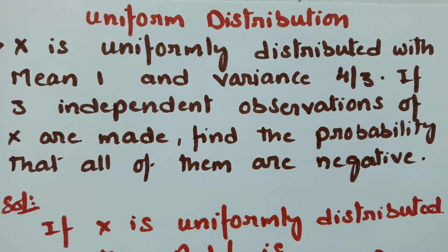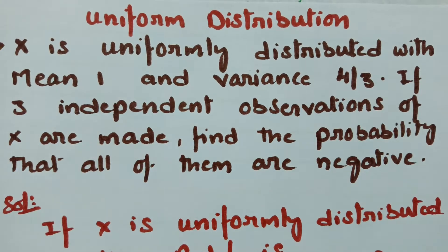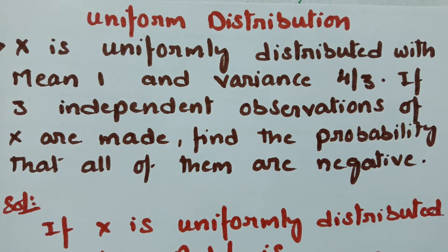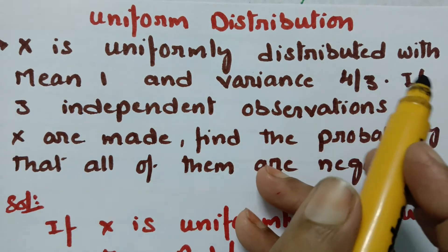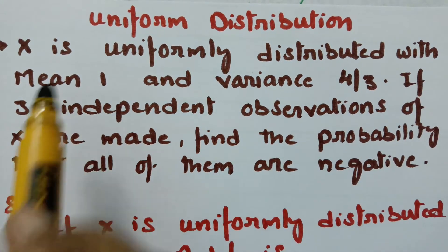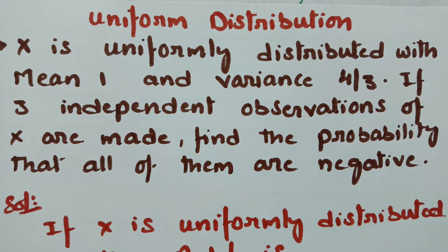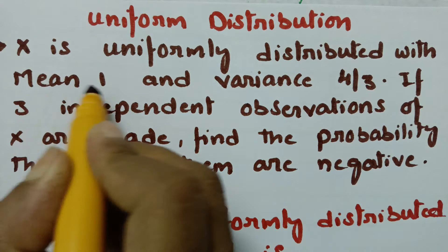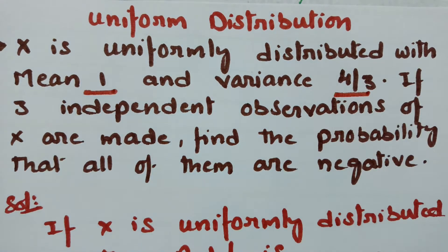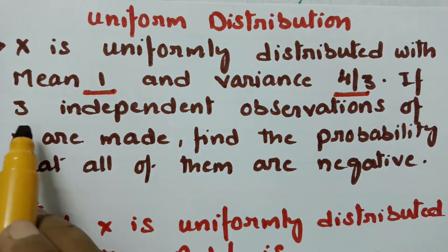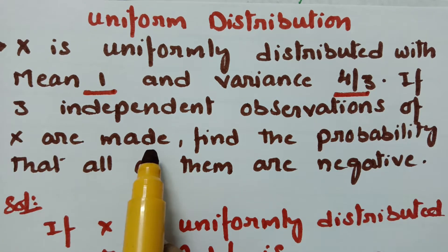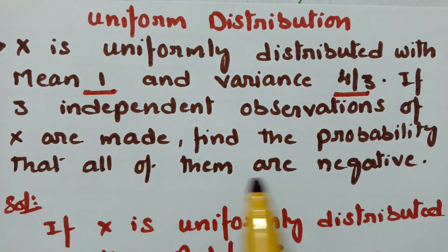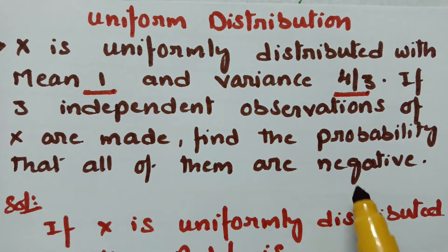Today's video is on uniform distribution. The problem is: if x is uniformly distributed with mean 1 and variance 4 by 3, and three independent observations of x are made, find the probability that all of them are negative.